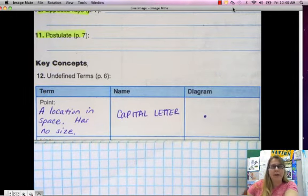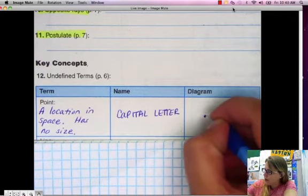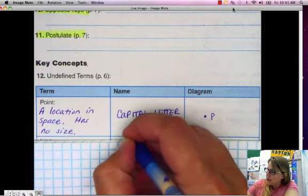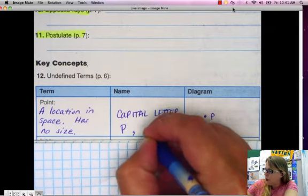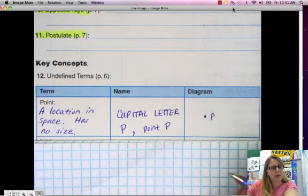Now a point is always named with a capital letter. And it doesn't matter which capital letter you choose. We could do any letter of the alphabet. So I'm going to go ahead and choose P for a point. So when we talk about this usually we just say the letter P. Sometimes you're going to write point P.